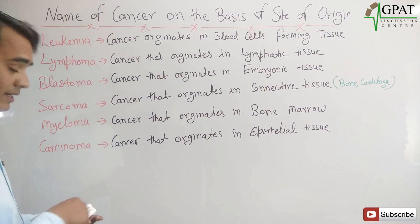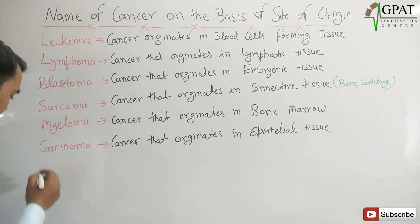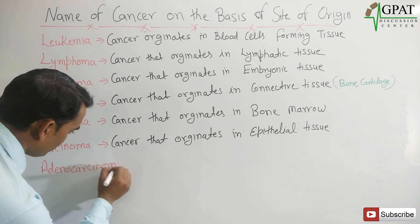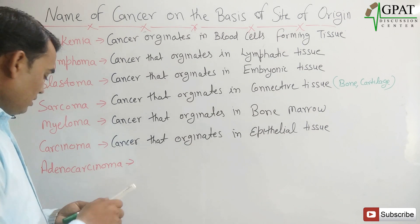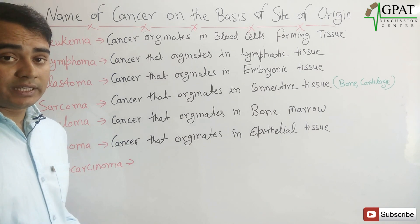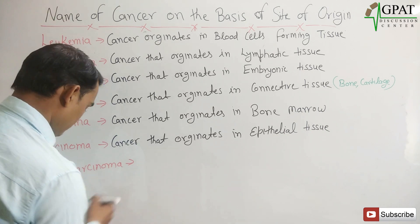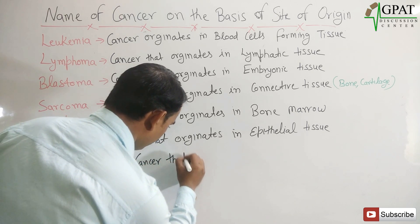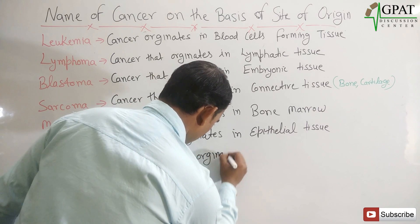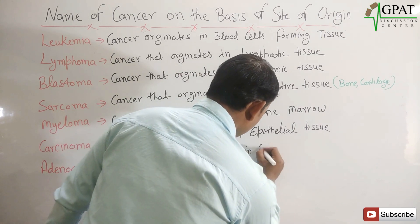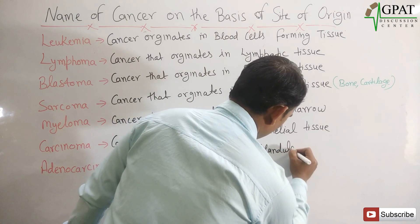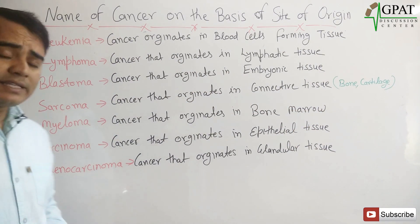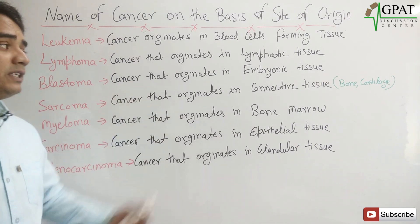The next one is adenocarcinoma. Adenocarcinoma is the cancer that mainly originates in the glandular tissue. So these are the basic types of cancer on the basis of their site of origin.